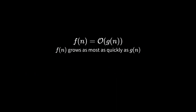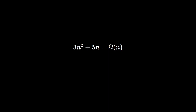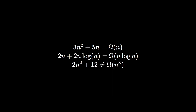So if big O notation means that one function grows at most as fast as another, is there also the opposite — namely that one function grows at least as fast as another? Yes, there is. In this case we write f is big omega of g. If big O notation has a less than or equal sign in its definition, you can probably already guess that big omega just replaces it with a greater than or equal sign. So we can say, for example, that the function 3n squared plus 5n increases at least linearly, because it increases faster — namely quadratically. Likewise, we can say that this function increases at least as fast as n log n, because it has one part that increases linearly and one that increases superlinearly. However, 2n squared plus 12 is not big omega of n cubed, because it increases more slowly.